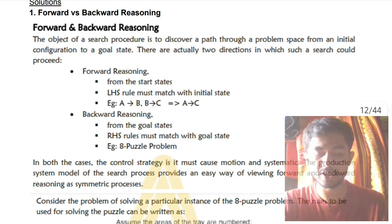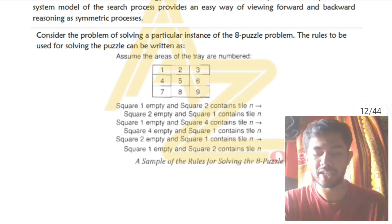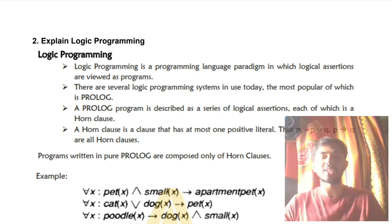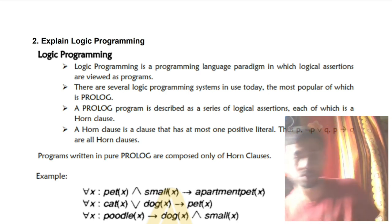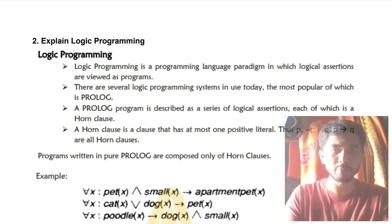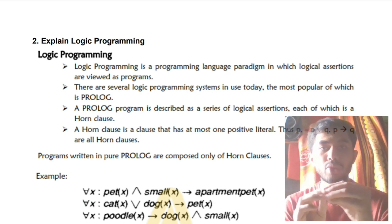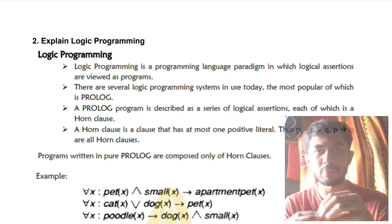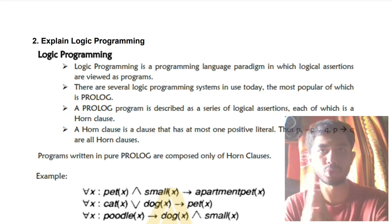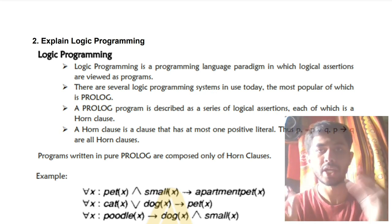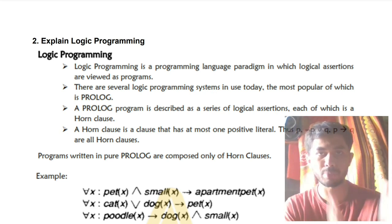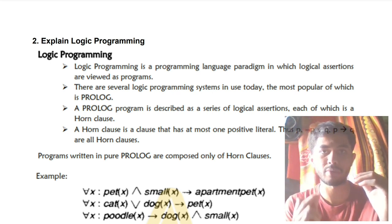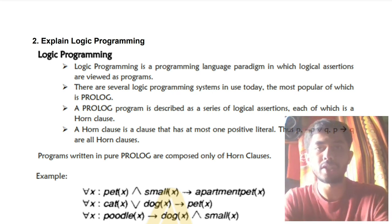That was about forward and backward reasoning — a super important question from an exam point of view. Moving on to the second super important question: explain logic programming. Logic programming is used because humans are very slow. If you are given some arguments and have to find an answer, you take a lot of time. Automating that using a programming language allows reaching a conclusion much more quickly.